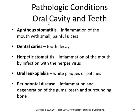Some pathological conditions of the oral cavity and teeth. Aphthous stomatitis is inflammation of the mouth with small, painful ulcers. Dental caries are tooth decay, also known as cavities. Herpetic stomatitis — inflammation of the mouth by infection with the herpes virus. Oral leukoplakia is white plaques or patches. Periodontal disease is inflammation and degeneration of the gums, teeth, and surrounding bone.